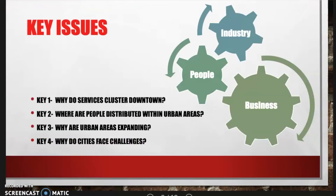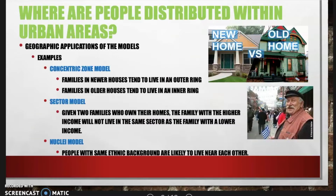In key issue two we're talking about where people are distributed within urban areas. To explain this, we discussed three models: the concentric zone model from the 1920s, the sector model from the 1930s, and the multiple nuclei model developed in the 1940s by sociologists and economists. Different models help explain why people live in certain areas and how things are growing within urban areas.